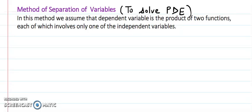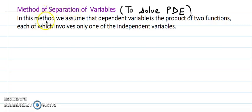Hello everyone. I am going to discuss one important method to solve partial differential equations. This method is known as the method of separation of variables. As the name suggests, in this method we assume the solution at the start. The solution for the dependent variable in terms of independent variables is assumed to be the product of two functions, each a function of only one independent variable.